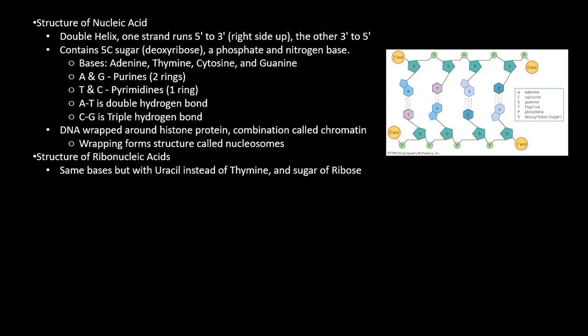DNA is wrapped around histone proteins. This combination is called chromatin. Wrapping forms structures called nucleosomes. Now the structure of ribonucleic acids, aka RNA. It has the same basis but with uracil substituted for thymine and the sugar ribose in the place of deoxyribose.